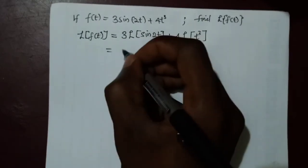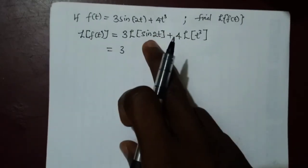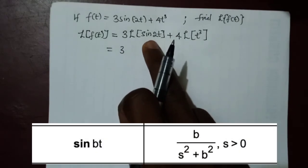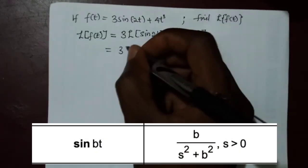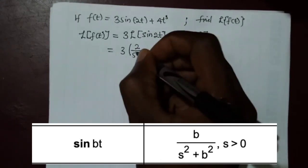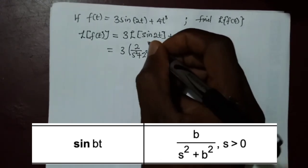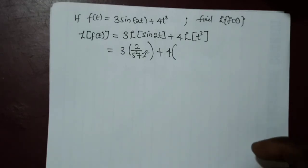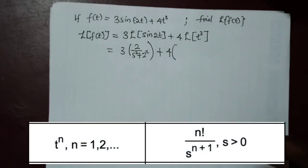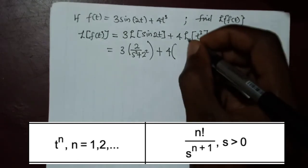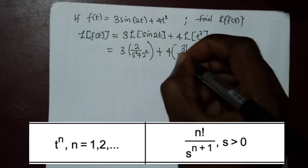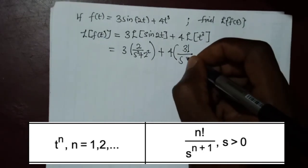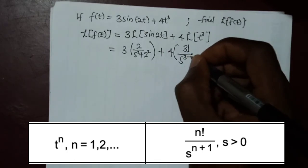For sin(2t), this corresponds to b/(s² + b²) with b = 2, giving 3 × 2/(s² + 2²). For t³, the Laplace transform of t^n is n!/(s^(n+1)), and our n = 3, so we have 4 × 3!/s^(3+1) = 4 × 3!/s⁴.